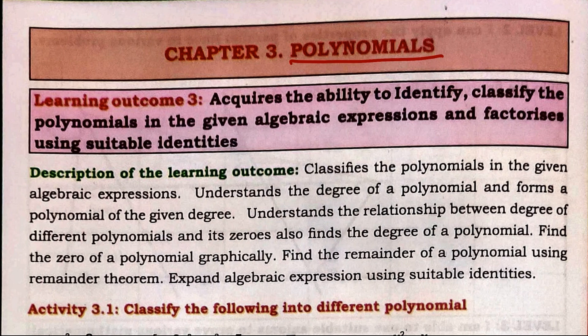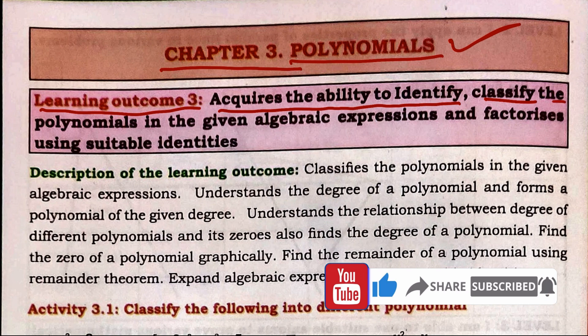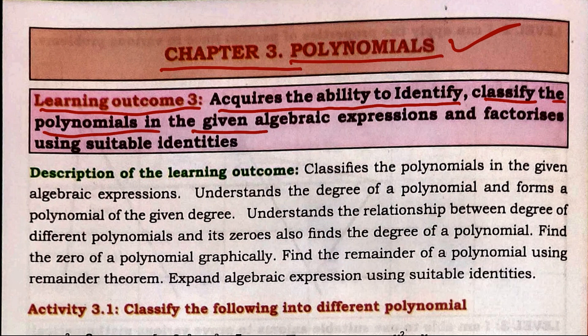Hi, hello, welcome to the Education Monitor channel. Today I'm going to discuss Class 9 Mathematics, third chapter: Polynomials. We start with Learning Outcome 3 — acquires the ability to identify and classify polynomials in given algebraic expressions and factorize using suitable identities.